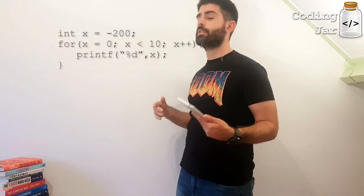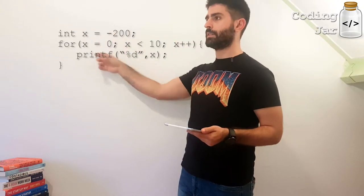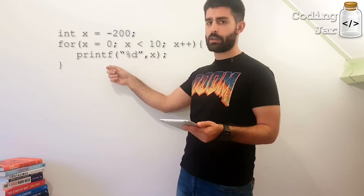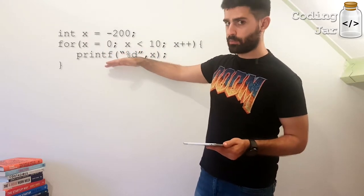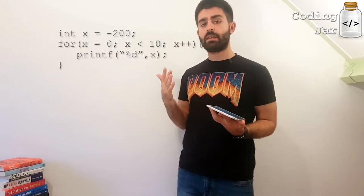After checking the breaking condition and seeing that it is not met, or actually that it is met, that this amounts to true, it will execute the block of code underneath. And when it finishes executing that block of code, it will execute x++, so it will increase x by 1.